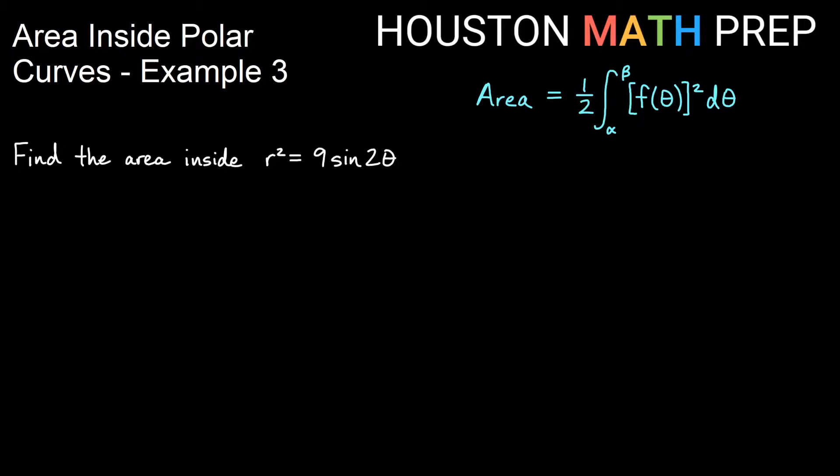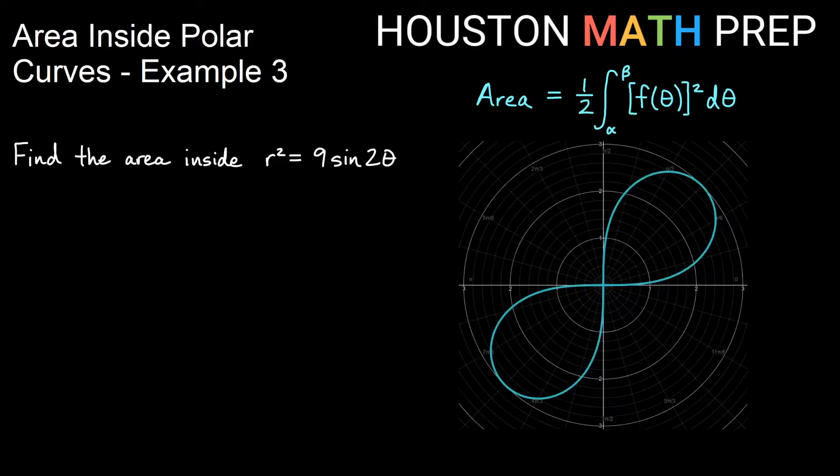Here we're going to find the area inside a lemniscate r² = 9sin(2θ). I've got my formula here: Area equals ½ integral from α to β of my function squared dθ. Remember this is r = f(θ) in the integral.